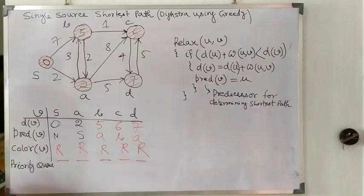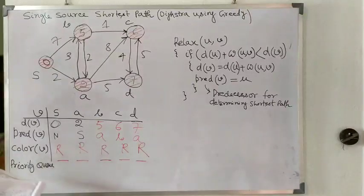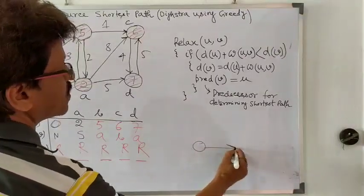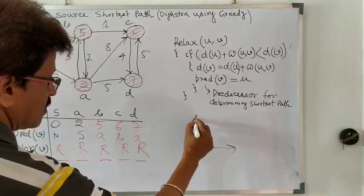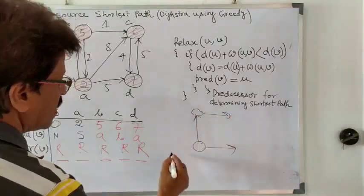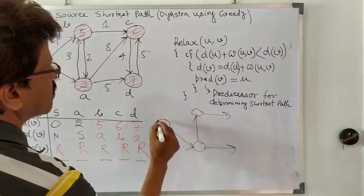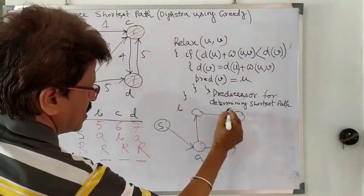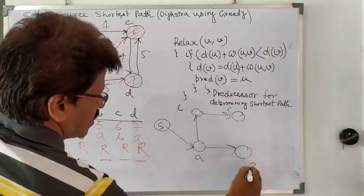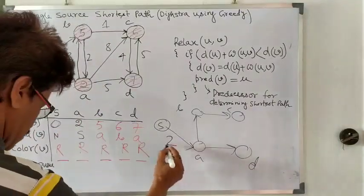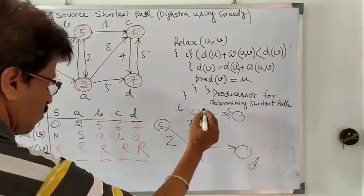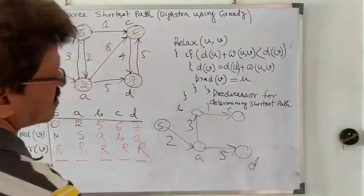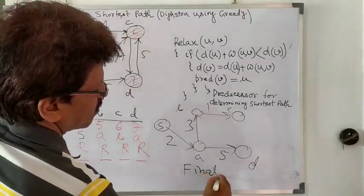So if we want to draw the final diagram, we can write it as follows. This is the source node S, then node A, node B, node C, and node D. We can write the corresponding values also: this was 2, this was 3, this was 1, and this was 5. This is our final graph for the shortest path.